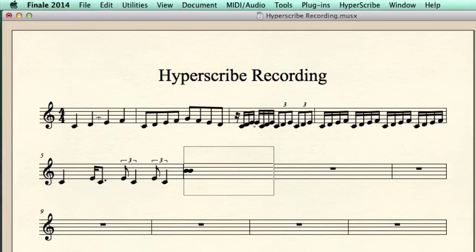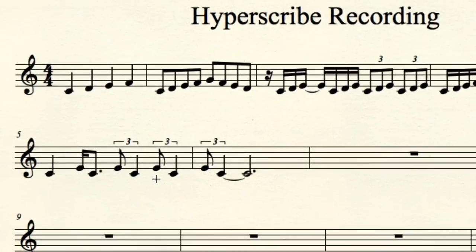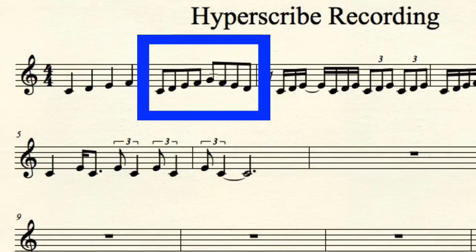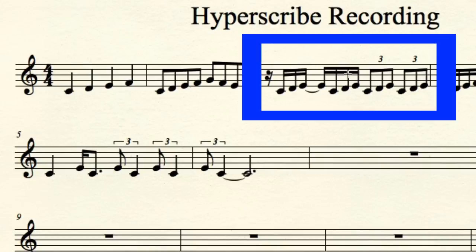Stop the recording — click anywhere on the screen. Let's see what happened. I only played quarter notes in the first bar and that looks good. Then I played eighth notes in the second bar — that looks good. But here, I thought I played only triplets, but as you can see, Finale thinks differently.